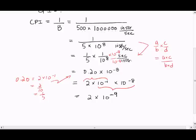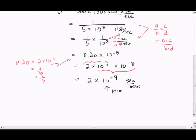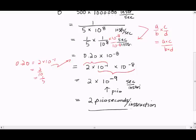Let's bring back our units. So here we have pico. So I can now write this as 2 picoseconds per instruction. So I can either underline my answer or put a box around it. Let's do another example.